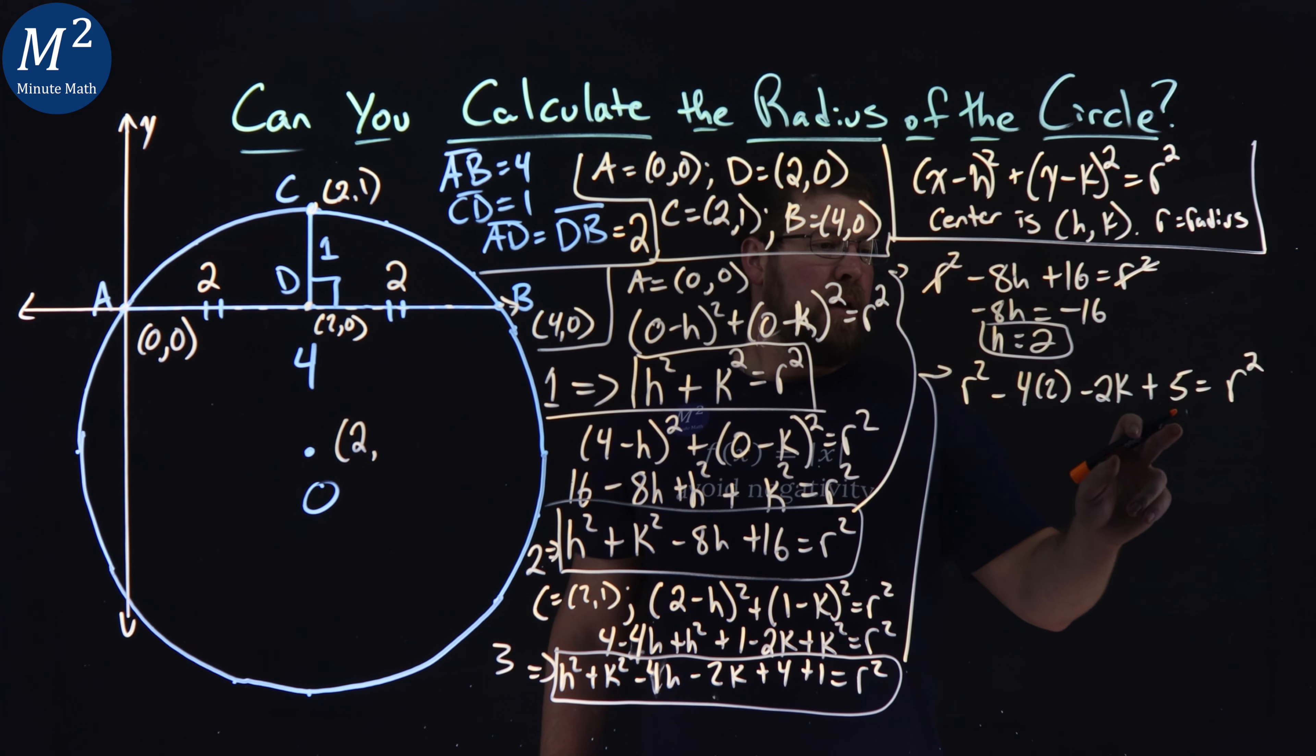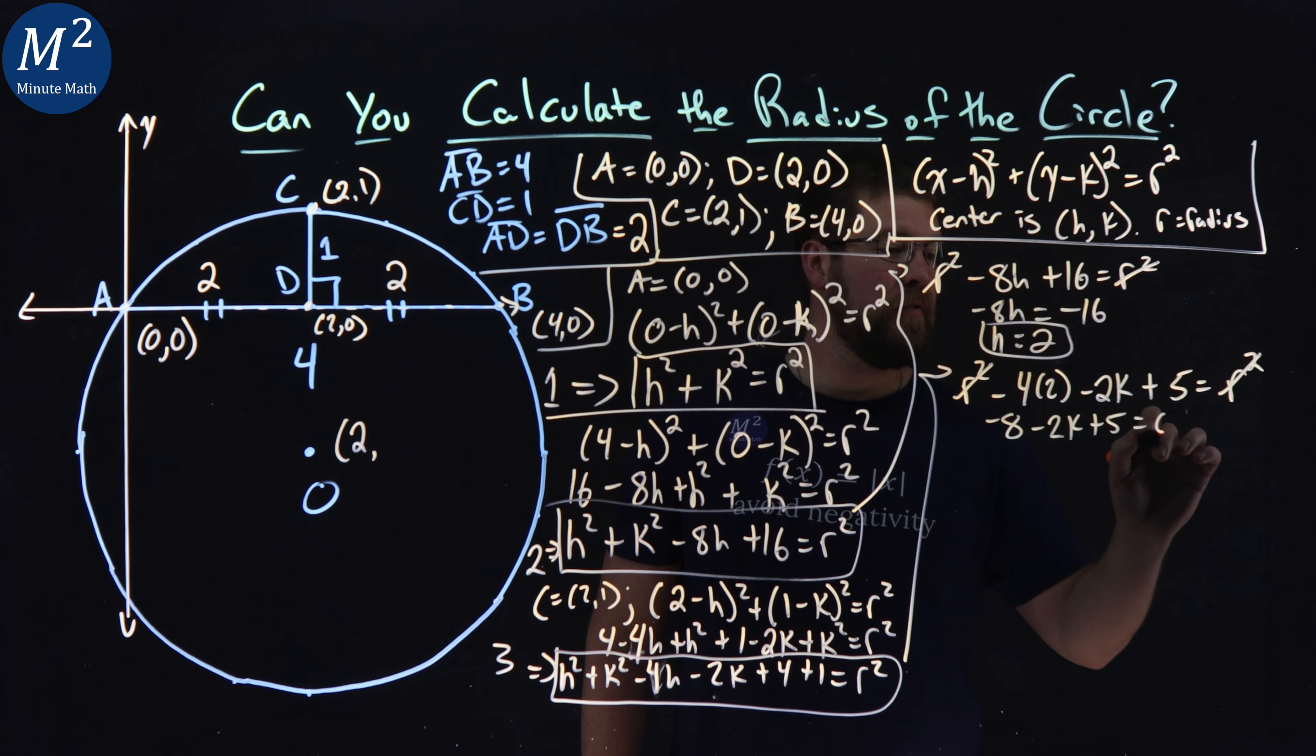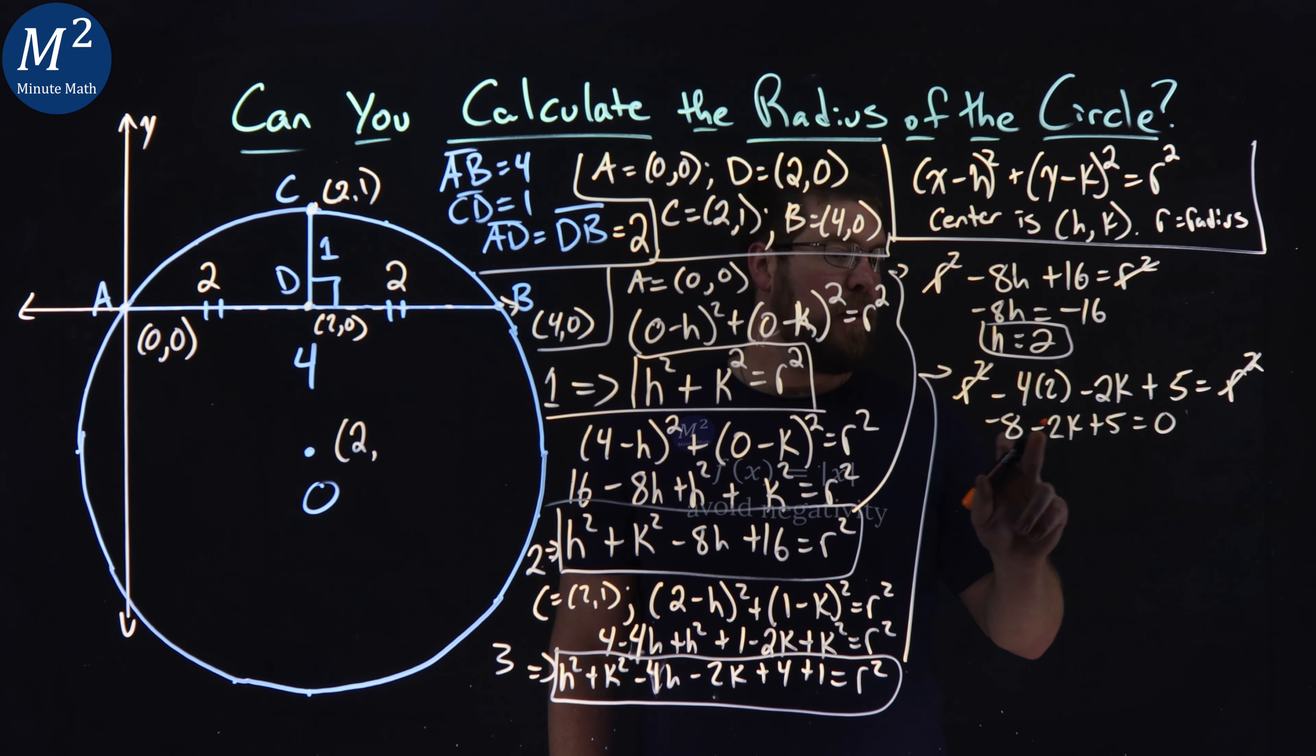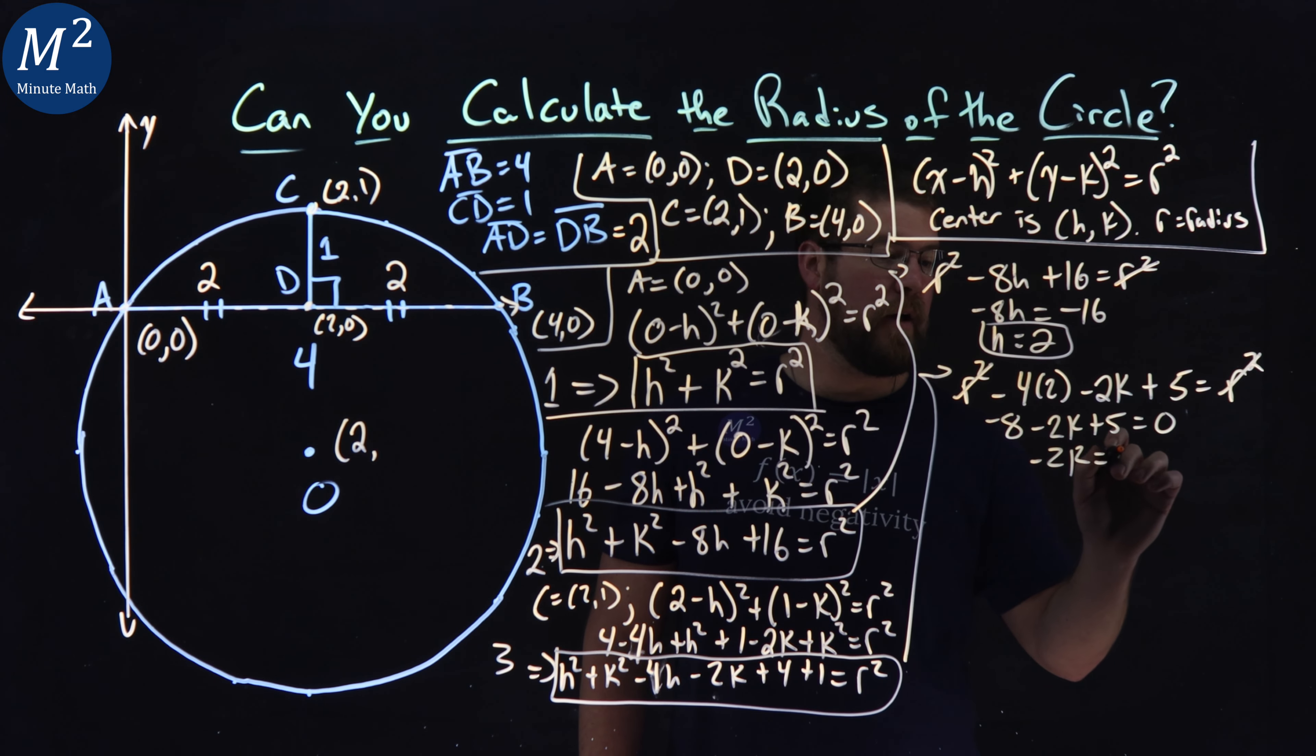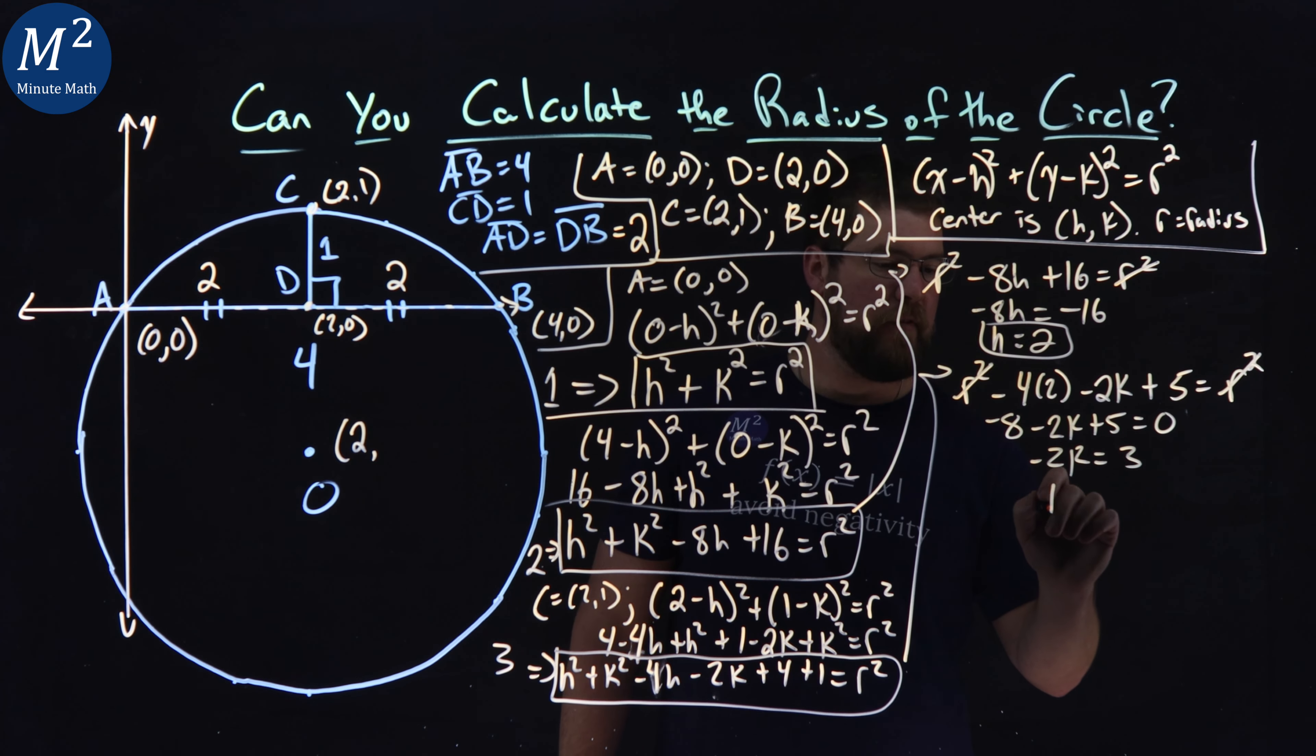R squareds can cancel. Simplify what we have. Negative four times 2 is negative 8 minus 2K plus 5 is equal to zero. Negative 8 plus 5 is negative 3. Add that over to the right, positive 3. So we have negative 2K equals positive 3. Divide both sides by negative 2. And we have K equals negative three halves.